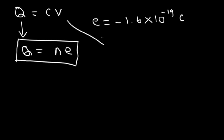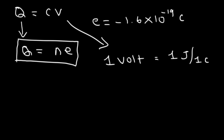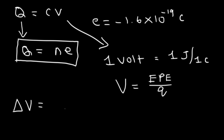Now you need to know that the unit of volt is 1 joule per coulomb. Electric potential, represented by V, is basically the ratio between the electric potential energy and the charge Q. Electric potential and voltage are not necessarily the same thing, but they're similar. Voltage is the difference in the electric potentials of two points — it's delta V, the change in electric potential.